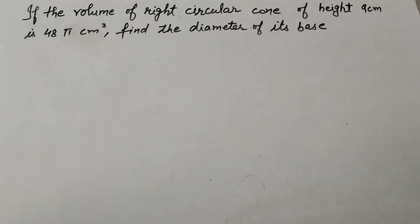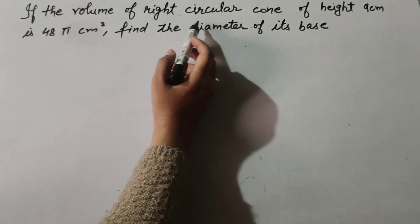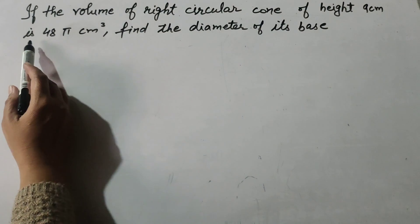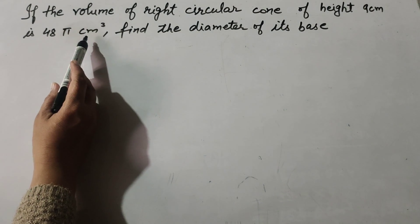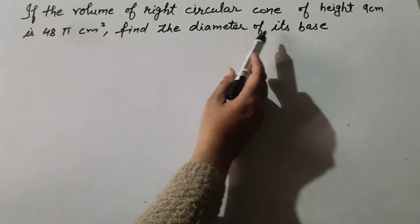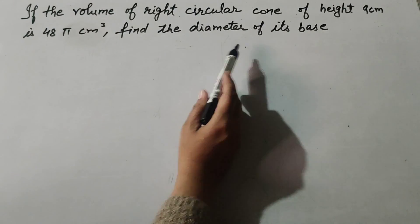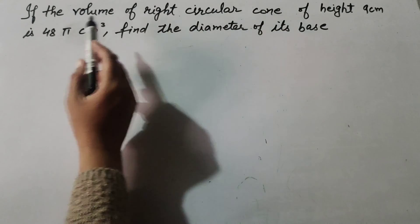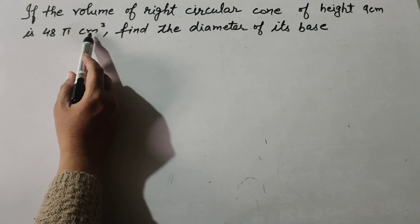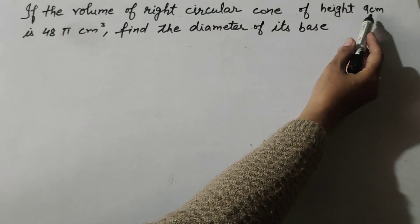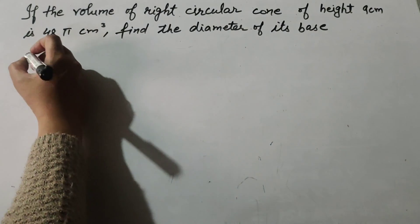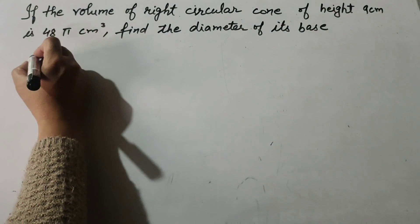Hello friends, welcome to my channel. In this video we discuss the question: if the volume of a right circular cone of height 9 centimeters is 48π centimeter cube, find the diameter of its base. The given information is: volume is 48π centimeter cube and height is 9 centimeters.